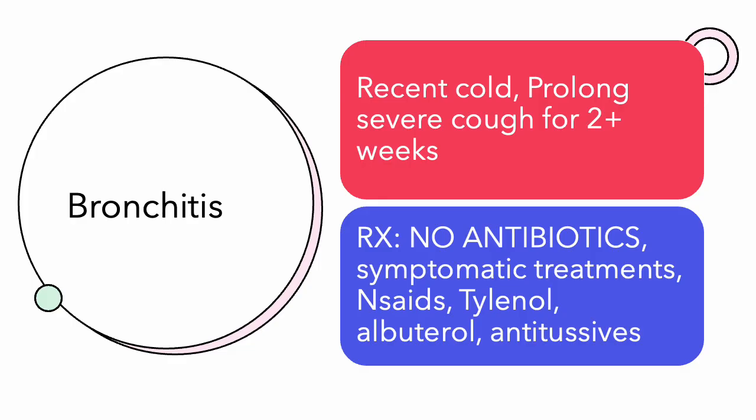Another disease process that really hits our upper respiratory is bronchitis. Bronchitis occurs usually in cold and flu season and really hits our asthmatic patients and patients with respiratory issues in general. They've had a recent cold and they've got this prolonged nagging cough for over two weeks — we're not going to prescribe antibiotics for bronchitis. We will give them NSAIDs, Tylenol, albuterol, and antitussives to help open up their airways and give adequate gas exchange.